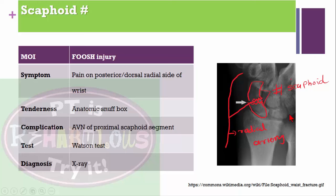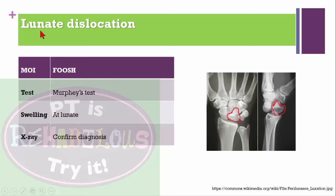Scaphoid fracture: mechanism of injury is fall on outstretched hand. Symptoms include pain on the posterior or dorsal side of the wrist and tenderness over the anatomical snuff box. Complication: avascular necrosis of the proximal scaphoid segment, because the radial artery supplies it and can be compromised. Watson test is positive. Must be differentially diagnosed from De Quervain's disease due to similar pain location. Confirmed by X-ray.